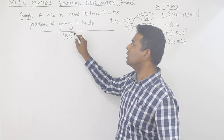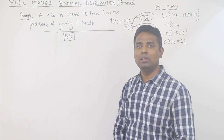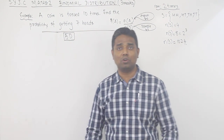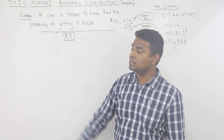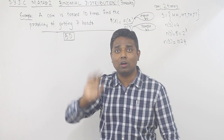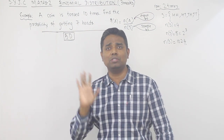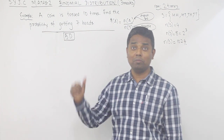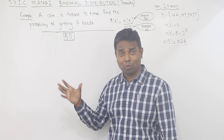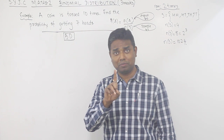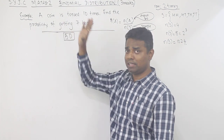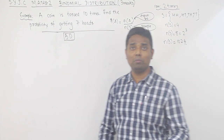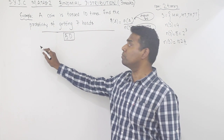Binomial Distribution ka concept hum use karte hain. Kyun? Binomial Distribution ka jo concept hai, it says: the coin is tossed 10 times, but you don't need to think about all 10. You only need to think about one toss — the formula is so well designed that it gives you the 10-toss answer from just the single-toss calculation. So what is the formula? Let us understand it using this example.